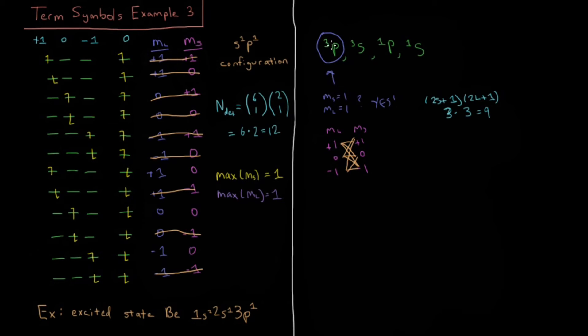Is there another triplet P here? We look again to see if there is another m sub s equals 1, m sub l equals 1. Do we have m sub s equals 1, m sub l equals 1 in anything that we haven't crossed off? I do not see such a term symbol, so I'm going to say no. So now we move on.